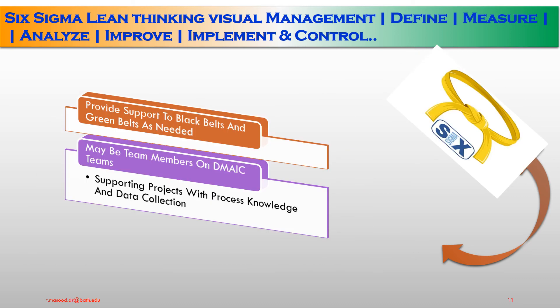In the last three slides we discussed Master Black Belt, Black Belt, and Green Belt. Now for Yellow Belt Six Sigma: Yellow Belts provide support to Black Belts and Green Belts as needed, serve as team members of DMAIC — Define, Measure, Analyze, Improve, and Control — teams, and support projects with process knowledge and data collection. That is the Yellow Belt's key responsibility and participation in Six Sigma.